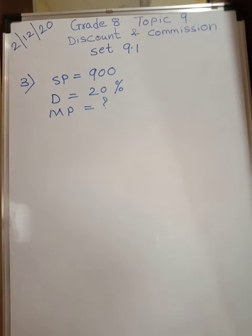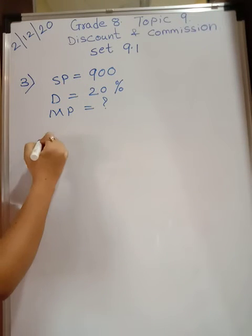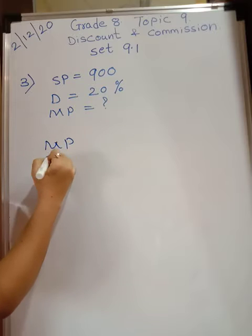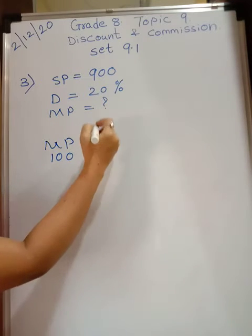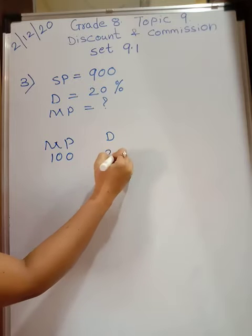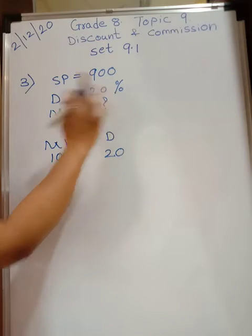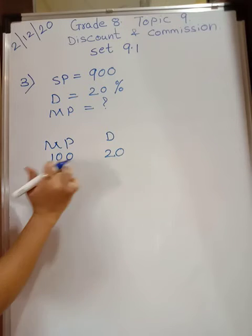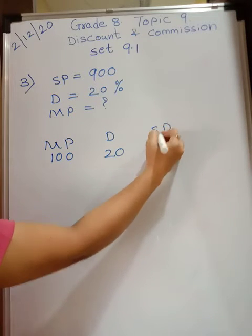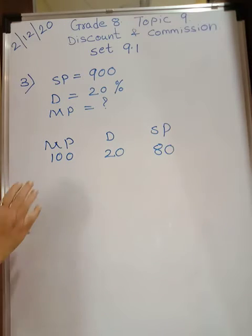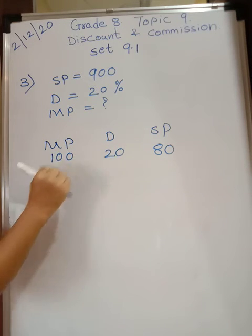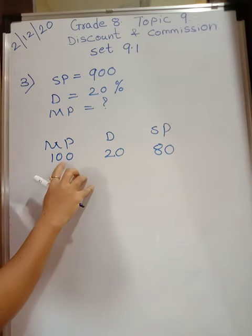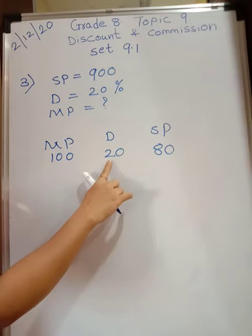Do not learn any formula, just stick to the concept. Discount is 20 percent means if marked price is 100 rupees, they have reduced the price by 20 rupees, that is 20 percent. So for 100 rupees they are reducing the price by 20 rupees, and after reducing, the selling price becomes 80 rupees. So a 100 rupee item is sold for 80 rupees — that is 20 percent discount.